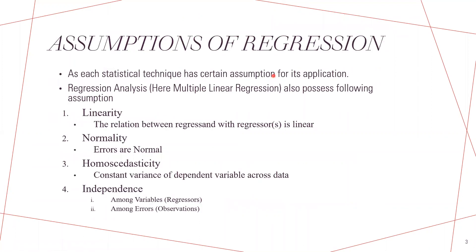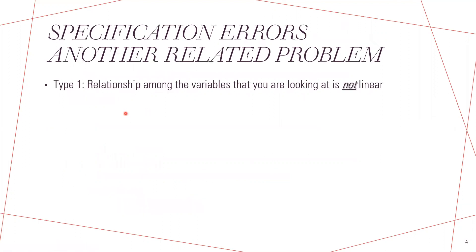But what if this assumption does not fulfill? The assumption of linearity does not fulfill. That kind of error is called specification error.